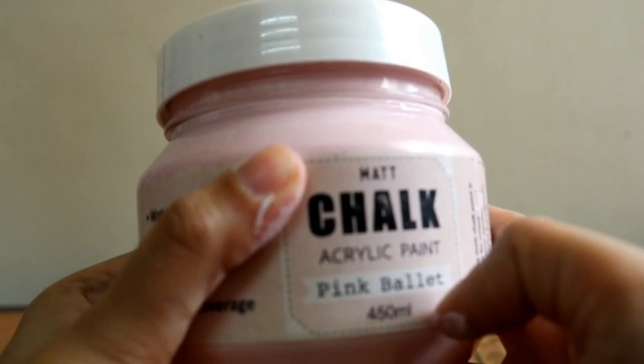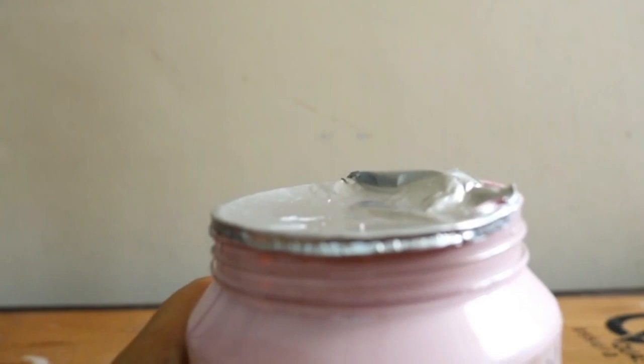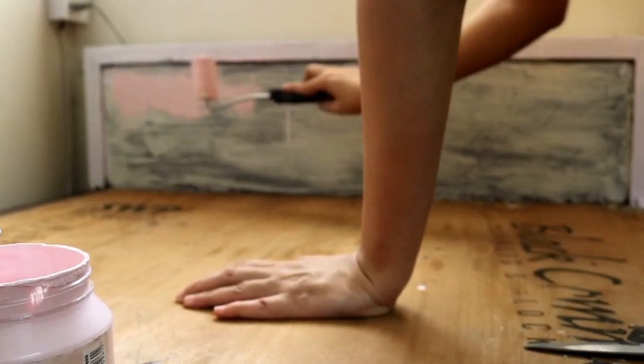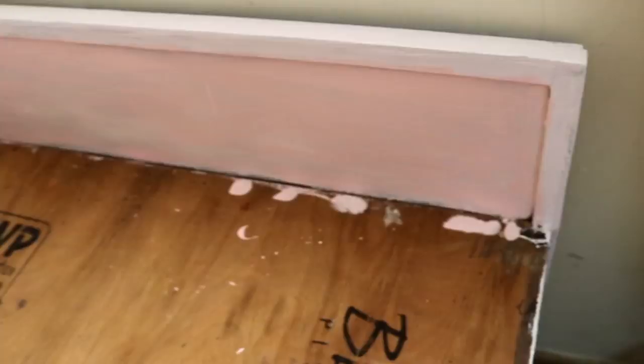Now, I am using chalkboard paint for inner section. I have ordered this chalkboard paint online. I will share this link with you. This is pale pink color I have chosen here. And I am using this foam brush for applying it. If you want, you can use any other brush. I will also give you the link in the description box if you want to buy it.